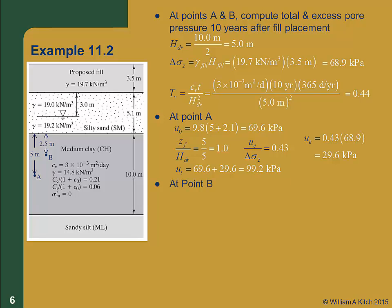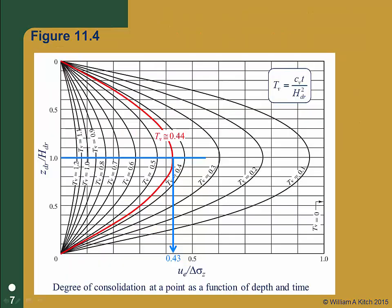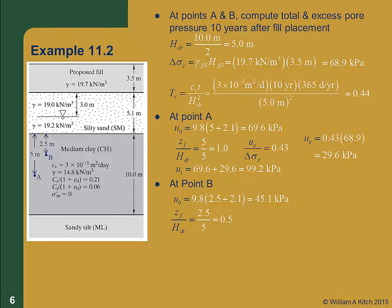We'll repeat this process at point B. Here, the static pore pressure is 9.8 times (2.5 plus 2.1), or 45.1 kPa. Our dimensionless depth at B is 2.5 over 5, or 0.5. We enter figure 11.4 at z_dr over h_dr of 0.5, find where that line intersects our interpolated isochrone of tv equal to 0.44, and find that u_e over delta sigma z is 0.31. We compute the actual excess pore pressure as 0.31 times 68.9, which is 21.4 kPa. Our total pore pressure at B is 45.1 plus 21.4, or 66.5 kPa.